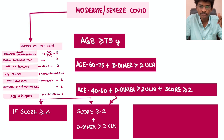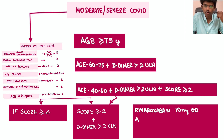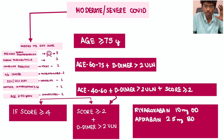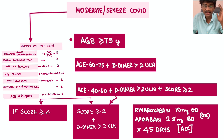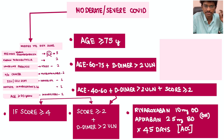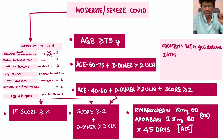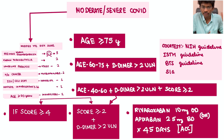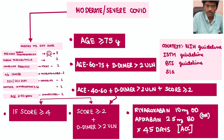For mild COVID patients with comorbidities or morbid obesity, consider only aspirin 75 mg once daily. We do not go for anticoagulants in mild COVID patients otherwise. Anticoagulants are given for 45 days post-discharge, with follow-up using D-dimer values and the patient's clinical status.